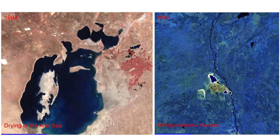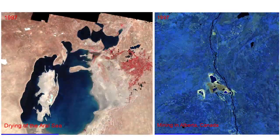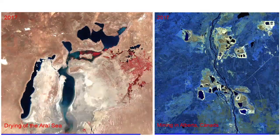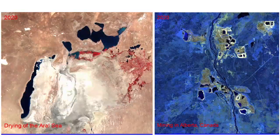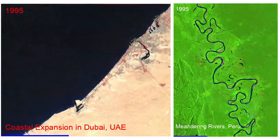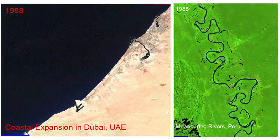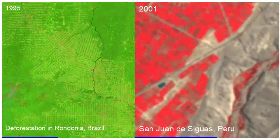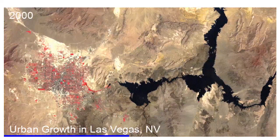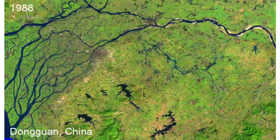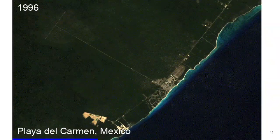I'm going to quickly show you some striking examples. Anyone can use the web app to create animations showcasing changes on the Earth's surface — for example, the draining of a rock mine in Canada, urban expansion in Dubai, river dynamics in South America, deforestation, landslides, urban growth in Las Vegas, China, and Mexico.